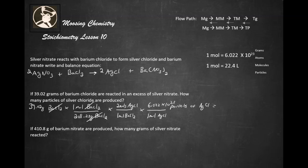So we're going to cancel out the moles there, cancel out the moles there, moles there, and moles there. And when we do, we get the answer to be 2.256 times 10 to the 23rd particles of silver chloride.